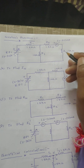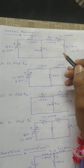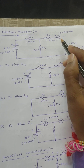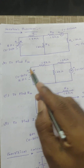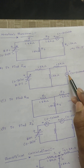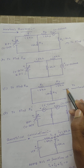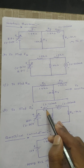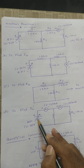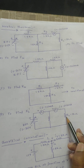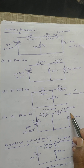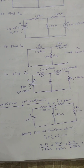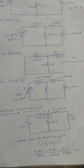Good evening. I would like to discuss Norton's theorem — theoretical calculations. These are the practical circuit diagrams to measure load current using the normal method. After that, by using Norton's theorem and this circuit diagram, I can calculate Norton's current. Then, using a multimeter, I can measure the Norton's equivalent resistance across these two terminals. Finally, using the Norton's equivalent circuit — a current source in parallel with Norton's equivalent resistance and load resistance — I can measure load current.